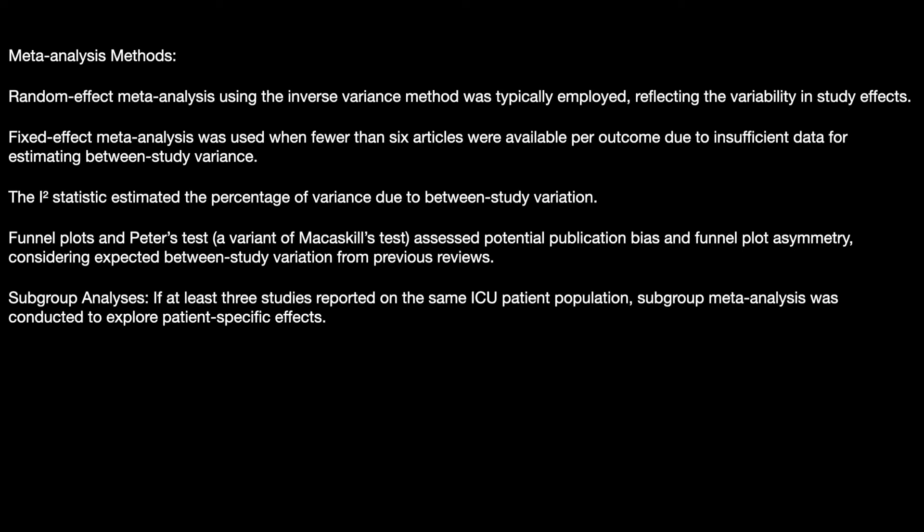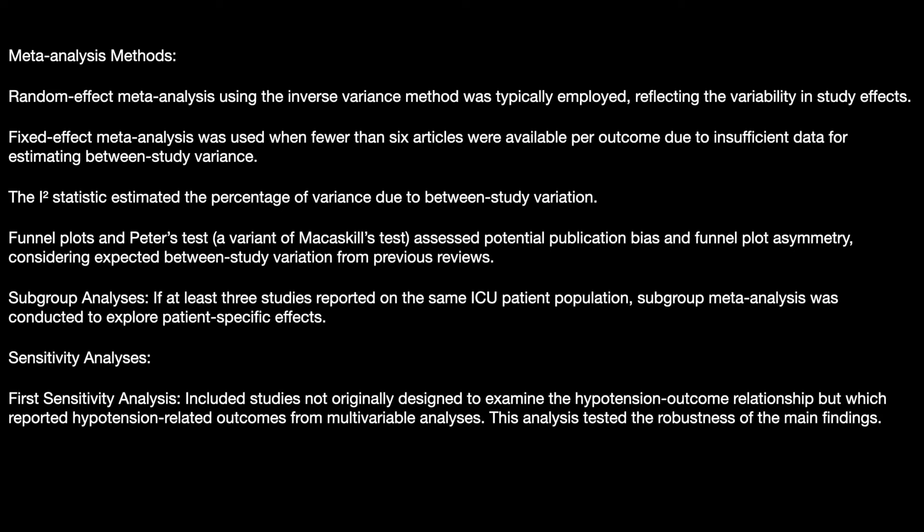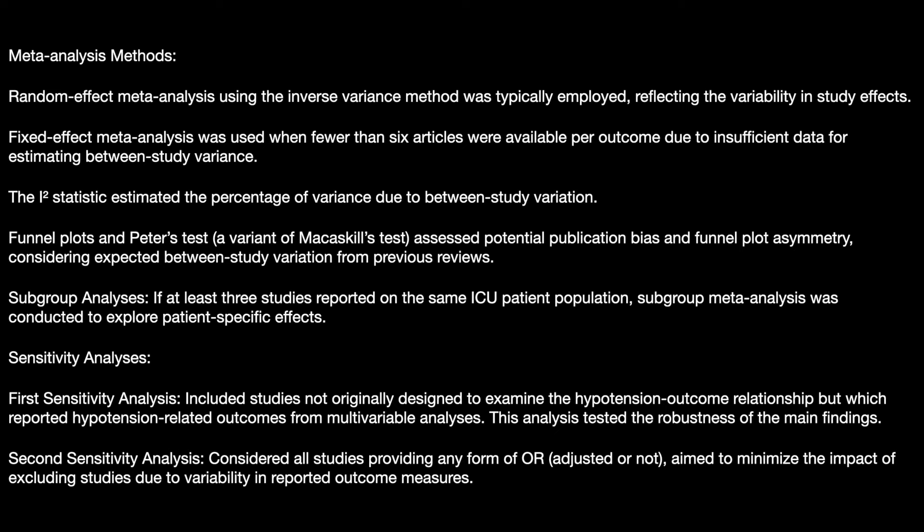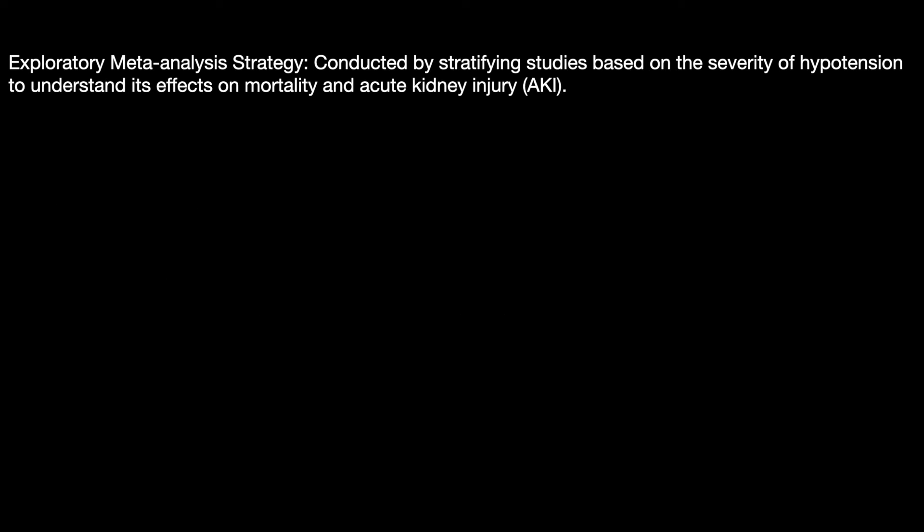If at least three studies reported the same ICU patient population, subgroup analysis was conducted to explore patient-specific effects. Sensitivity analysis first included studies not originally designed to examine the hypotension-outcome relationship but which reported hypotension-related outcomes from multivariable analysis, testing the robustness of main findings. A second sensitivity analysis considered all studies providing any form of odds ratio, to minimize the impact of excluding studies due to variability in reported outcome measures. An exploratory strategy stratified studies based on severity of hypotension to understand its effect on mortality and AKI.